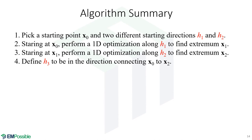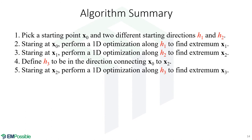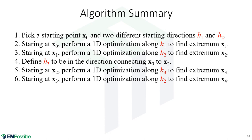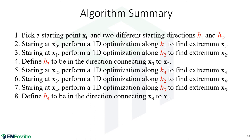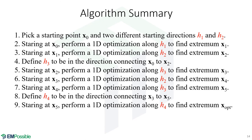We calculate a new direction h3 in the direction connecting x-naught to x2 — this is a conjugate direction. Starting at x2, we perform a one-dimensional optimization along h3 to get to extremum x3. Then starting at x3, we optimize along h2 to get extremum x4. Then starting at x4, we optimize along conjugate direction h3 to get extremum x5. We then define a second conjugate direction h4 connecting x3 to x5, and starting at x5 we optimize along h4.